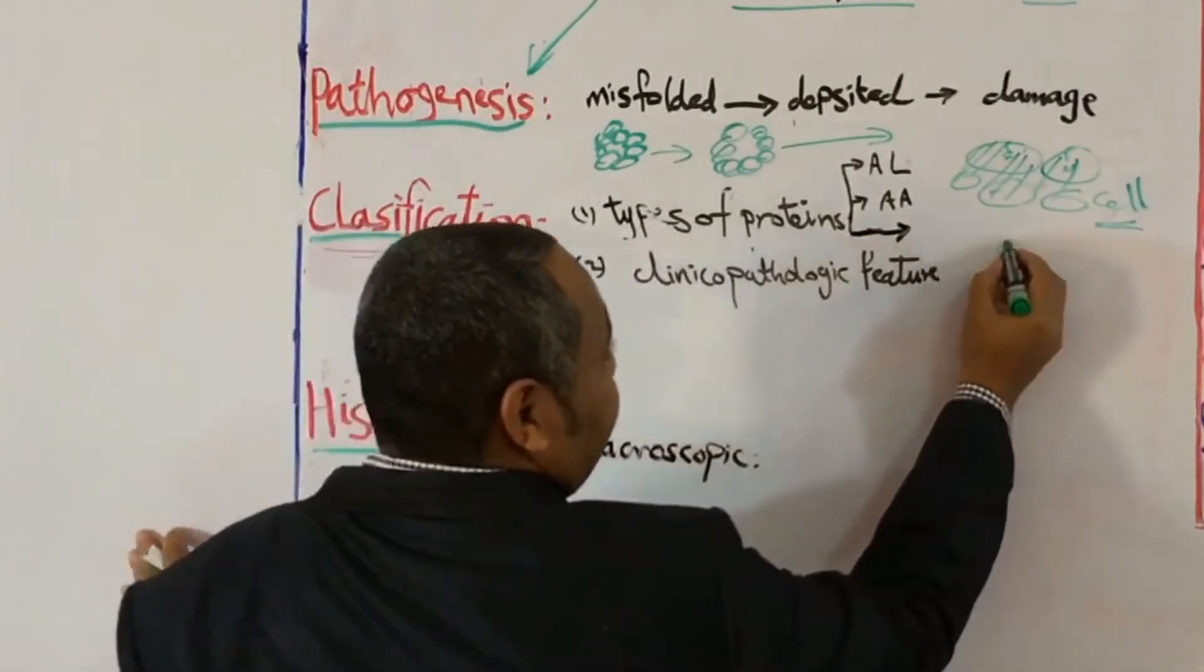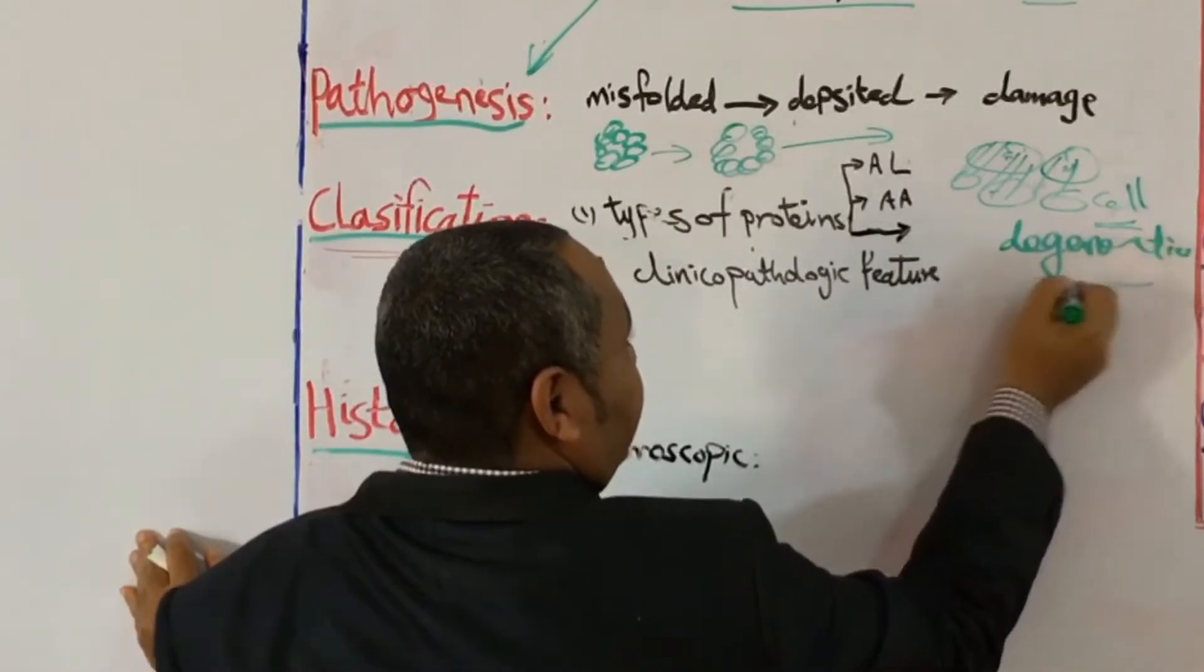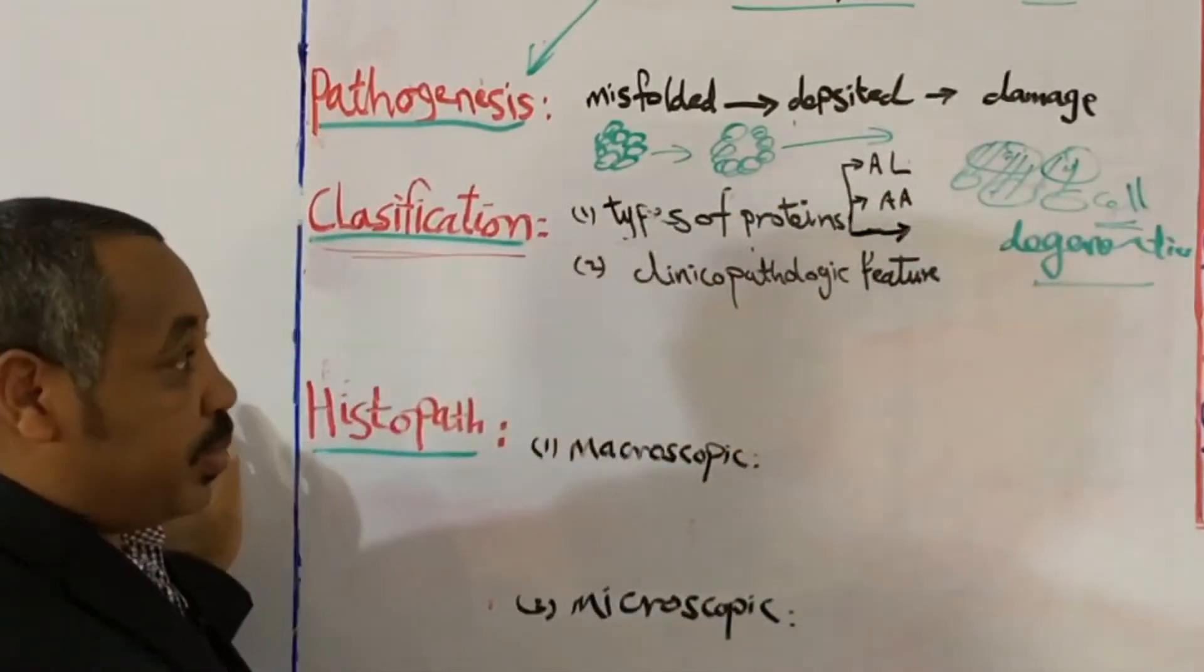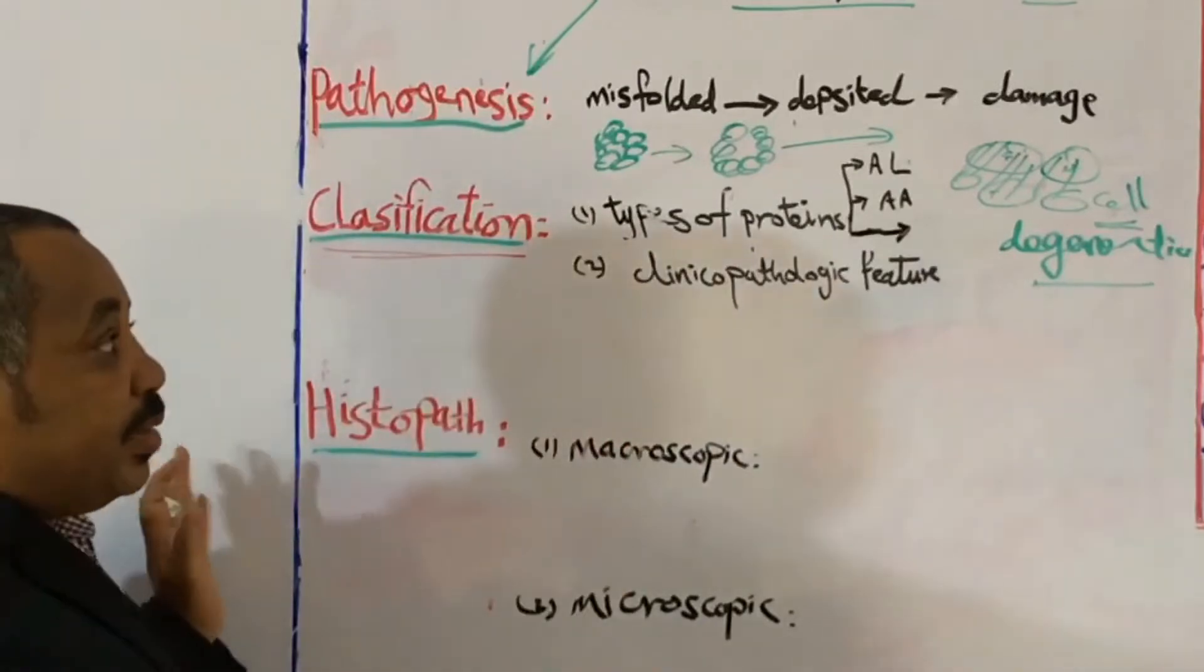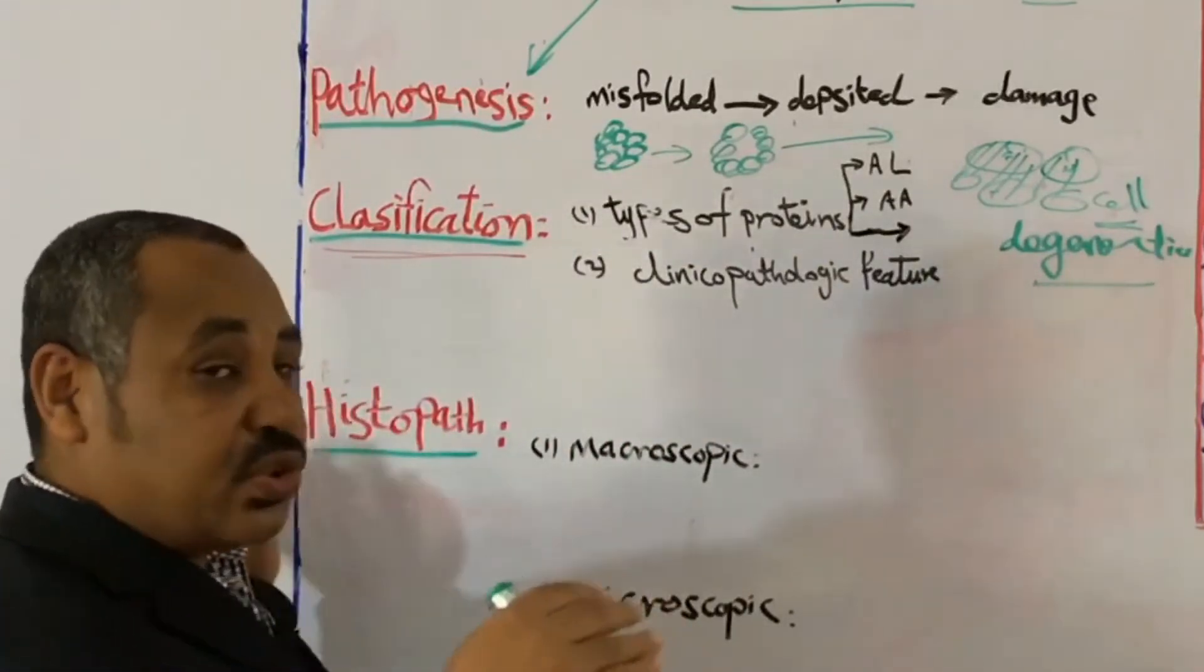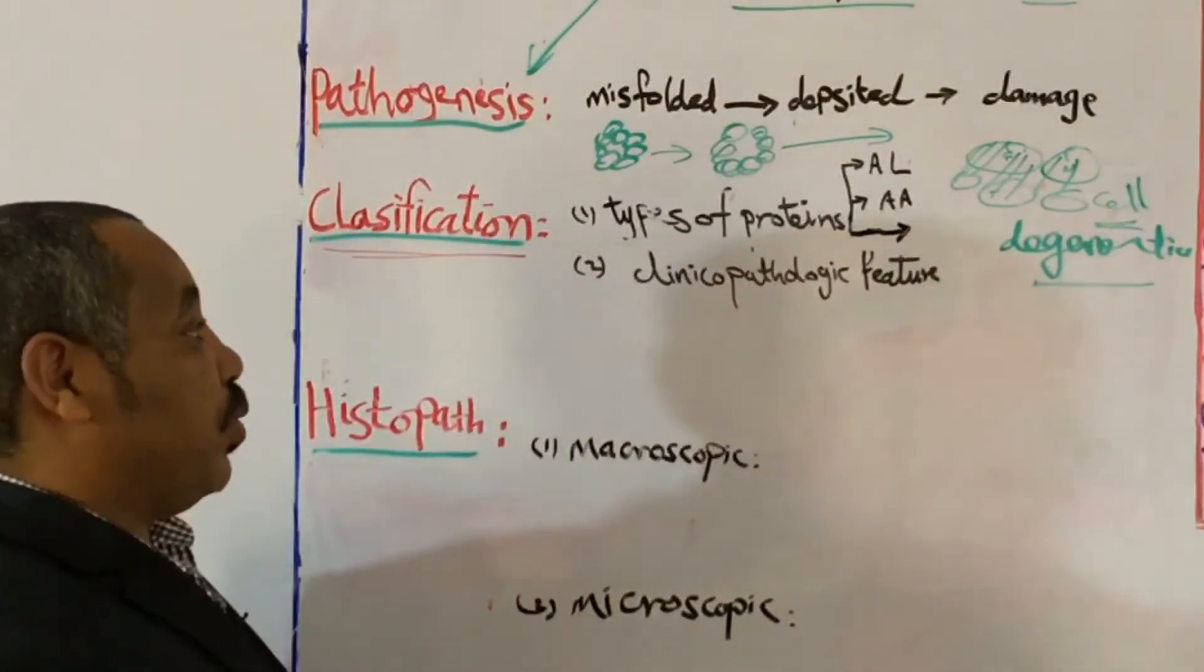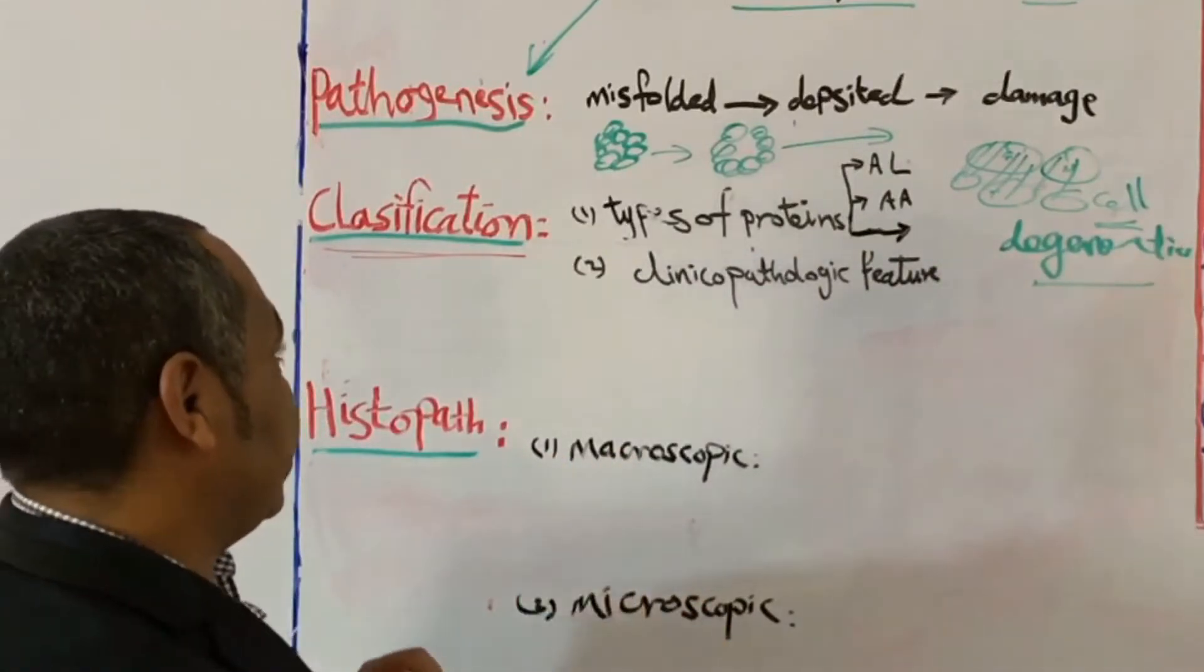So degeneration due to deposition, heavy deposition of this abnormal protein. And as a result of that, clinical symptoms and signs depending on which organ is affected. I will talk about it. And actually in systemic pathology, we'll talk about systemic amyloidosis in every organ. So now we are talking about the basic things about amyloidosis.